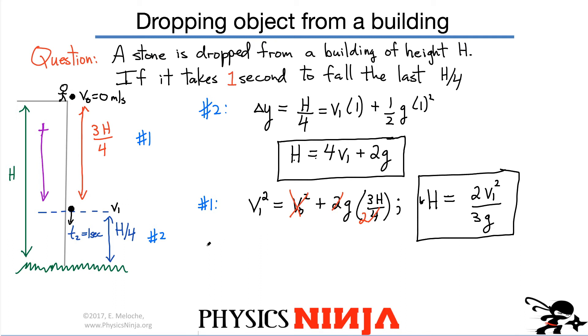So the expression I get is, substitute for H, you get 2V1 squared divided by 3G and equals to everything else. 4V1 plus 2G. All right. What I'm going to do now is I'm going to just put all the terms on the same side. And after that, we're going to be left with solving a quadratic equation, which looks kind of messy, but it's not that bad.